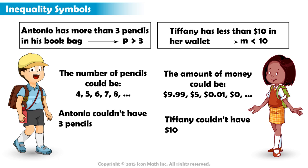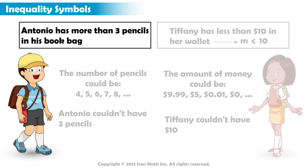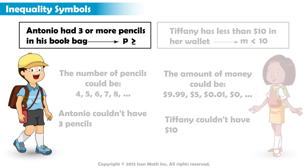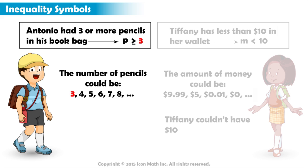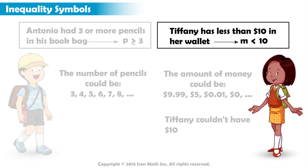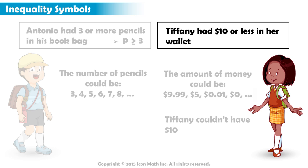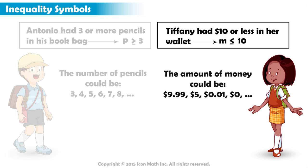This is where the next inequality symbols are different. If Antonio had 3 or more pencils, we could describe the number of pencils as p greater than or equal to 3. The symbol greater than or equal to lets us know that the number of pencils could equal 3 or could be more than 3. Similarly for Tiffany, if she had $10 or less in her wallet, we could represent the amount of money she has as m less than or equal to 10. The less than or equal to symbol lets us know that the amount of money Tiffany has could be exactly $10 or could be less than $10.